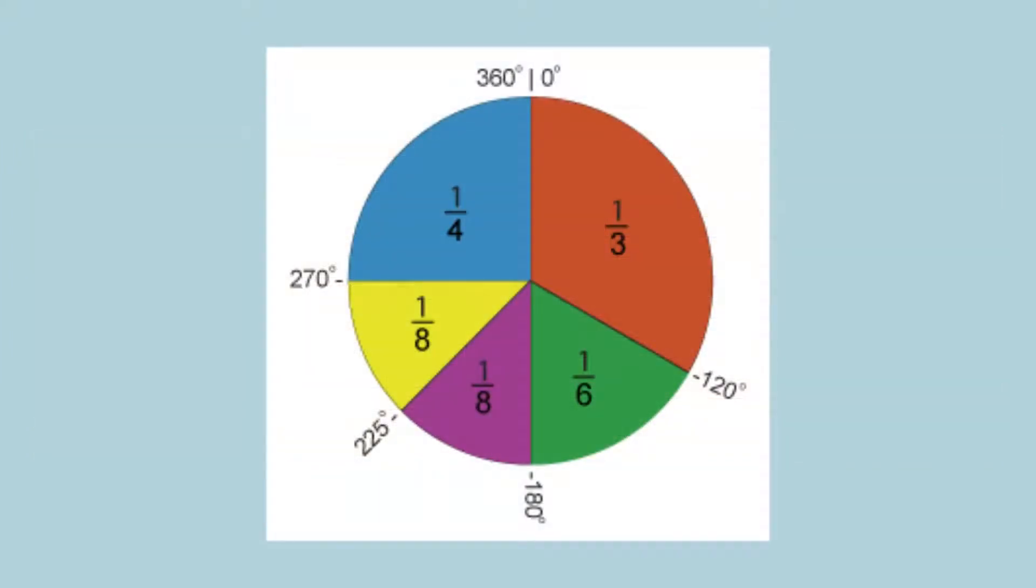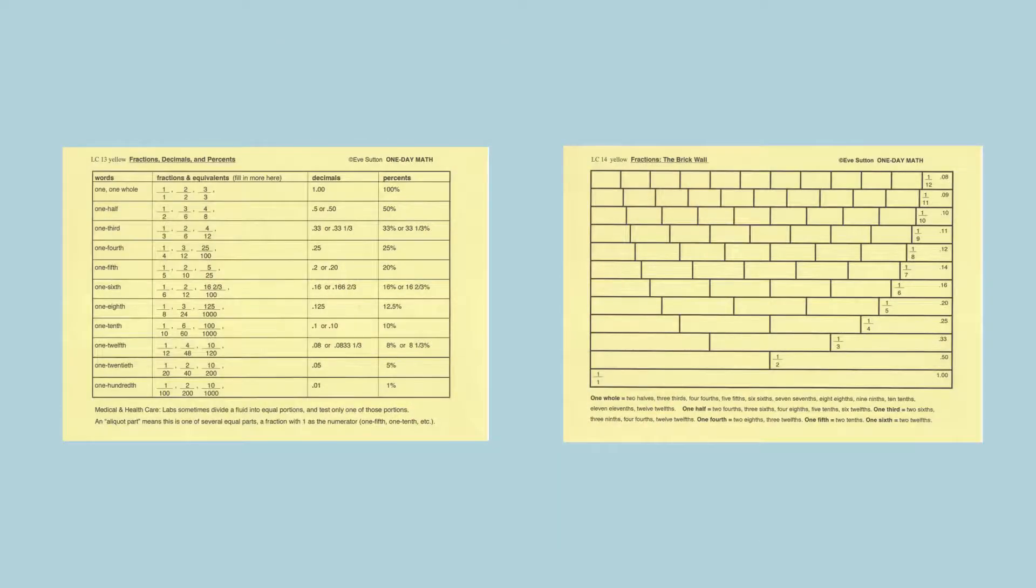Look at the pie chart on the back of your color illustration card. You can see that each wedge is a fraction of the whole circle. Now look at the two lesson cards.